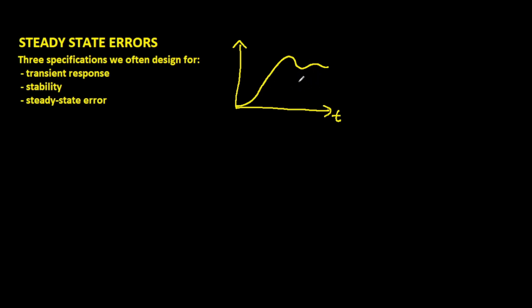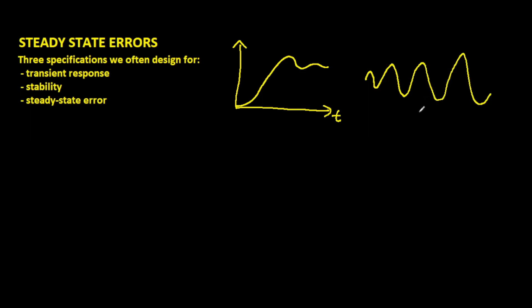We might want to design for that because we want it to be as quick as possible, or maybe we don't want it to lag in its response. We want to make sure there is an overshoot of not more than a certain percent, or we want to make sure there is no overshoot whatsoever. Secondly, we could design for stability, to make sure that our system is stable — that when we give a bounded input, we don't end up with an output that is growing with time, in other words, an unbounded output.